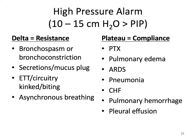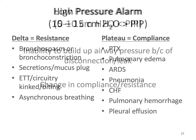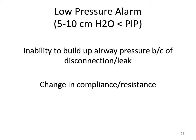Issues with delta pressure include bronchospasm or bronchoconstriction, secretions or mucus plugging, endotracheal tube or circuitry kinking or biting, or asynchronous breathing. Issues with plateau pressure include pneumothorax, pulmonary edema, acute respiratory distress syndrome, pneumonia, CHF, pulmonary hemorrhage, and pleural effusion. With a low pressure alarm — usually 5 to 10 centimeters of water below the set PIP — there's usually an inability to build up airway pressure because of a disconnection or a leak, or it could indicate a change in compliance or resistance.